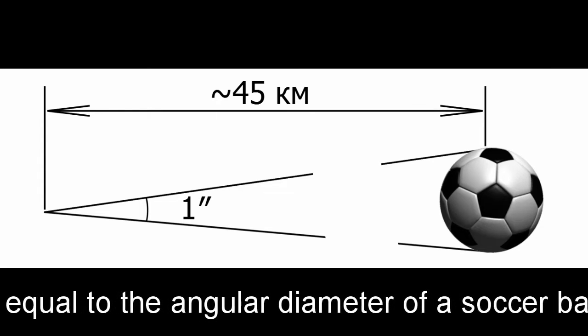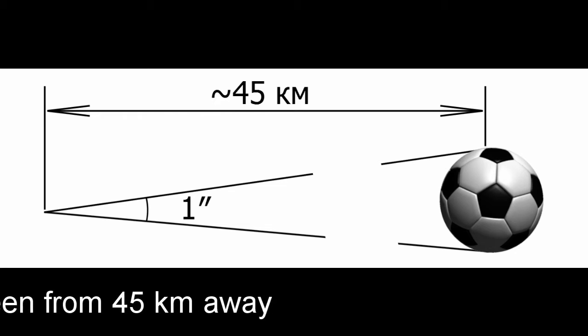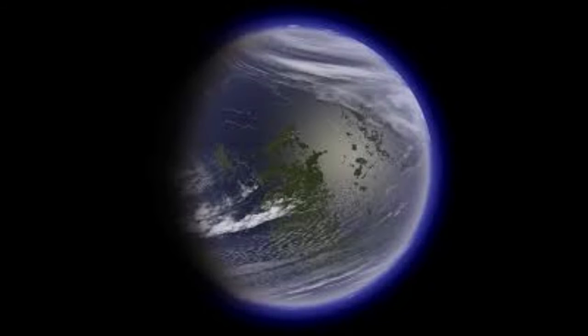To detect a planet the size of Jupiter, you would need precision of less than a milliarcsecond, or several thousand times greater. By the 1980s, astronomers believed their detectors were sensitive enough to attempt the search. Several were undertaken. None were successful.